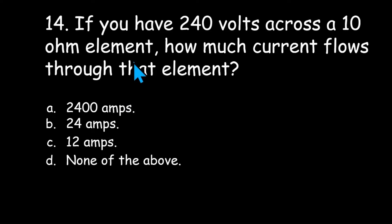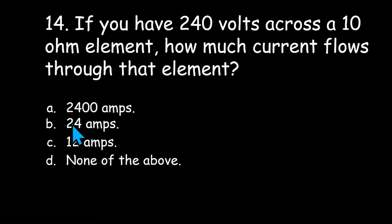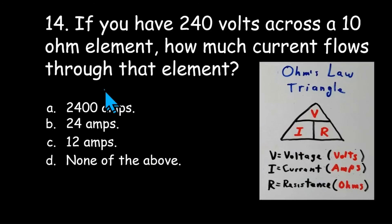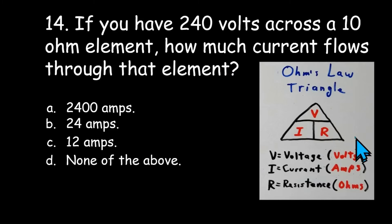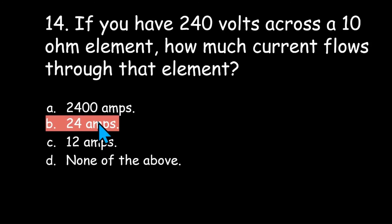Number fourteen: if you have 240 volts across a 10 ohm element, how much current flows through that element? 2400 amps, 24 amps, 12 amps, or none of the above? We rely on Ohm's Law for this answer: current equals voltage divided by resistance. So 240 volts divided by 10 ohms gives you 24 amps — and that's our answer.